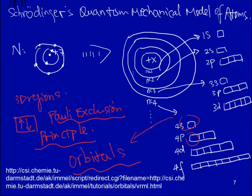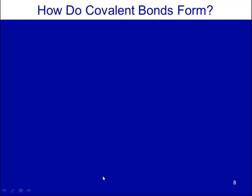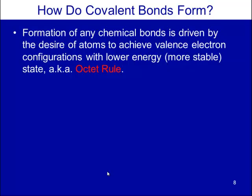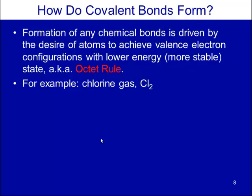We just went through the shapes of atomic orbitals and here is the link for that website. Now let's look at some examples of how covalent bonds form. The desire to form bonds is driven by atoms achieving the valence electron configuration of the noble gas — the octet rule — because noble gas elements are the most stable on the periodic table.